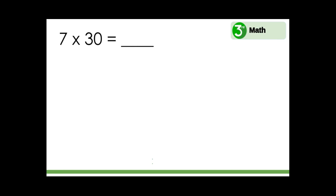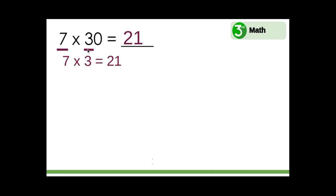Seven times thirty. Can we use what we know about seven times three to solve seven times thirty? Seven times three ones equals twenty-one. But what about seven times three tens? Since there's a zero in the ones place allowing three to be in the tens place, we can also add a zero here so this can show twenty-one tens. Seven times thirty equals two hundred ten.